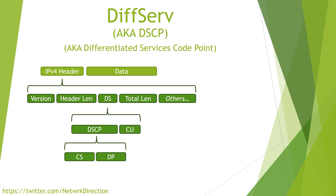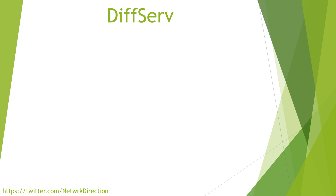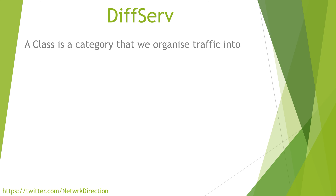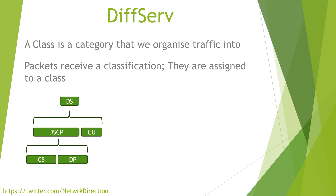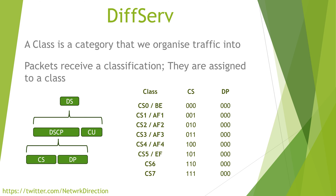We'll look at what the DSCP bits are used for soon, but first we need to understand classes, also known as forwarding classes. A class is simply a category that we organise traffic into. For example, we might have a class for real-time traffic like voice and video, and another class for network traffic like OSPF and BGP. Once a packet has been classified — that is, assigned to a class — our devices can make decisions based on that class. A router would probably consider any traffic in the real-time class to be very important and will take action to make sure that packets in that class are delivered on time. When a packet is marked with a DSCP value, it has essentially already been allocated to a class. The three class selector bits are used to mark the forwarding class, meaning there are eight different forwarding classes, each with their own name.